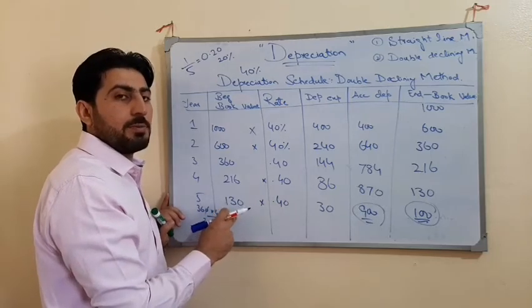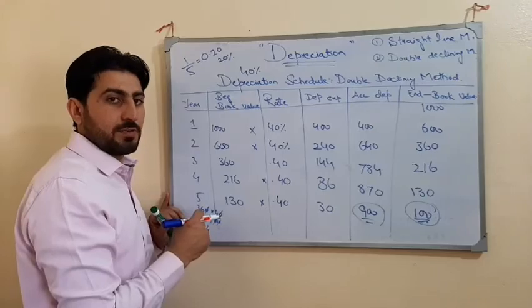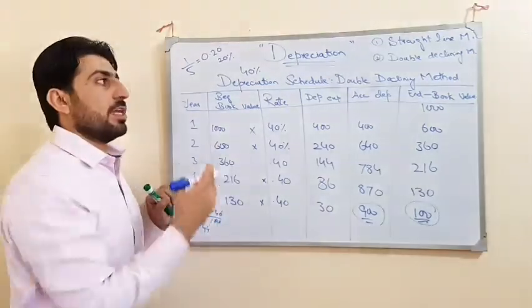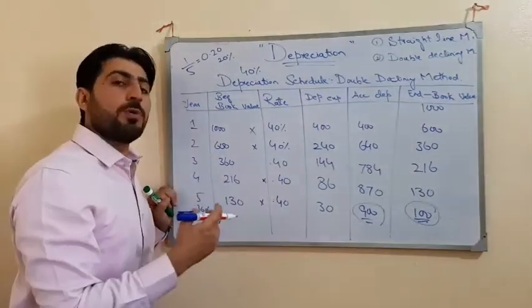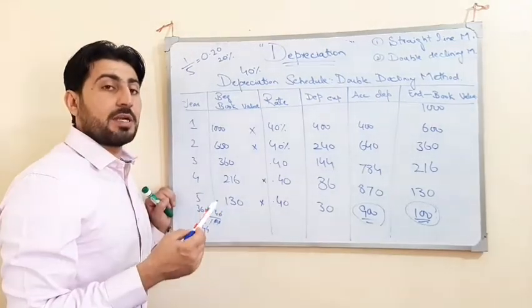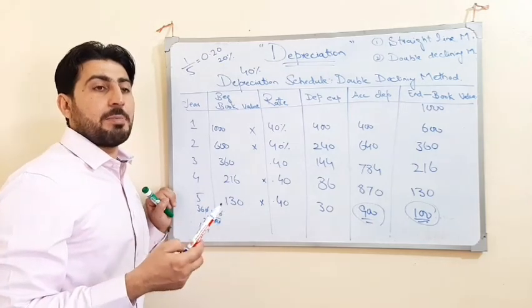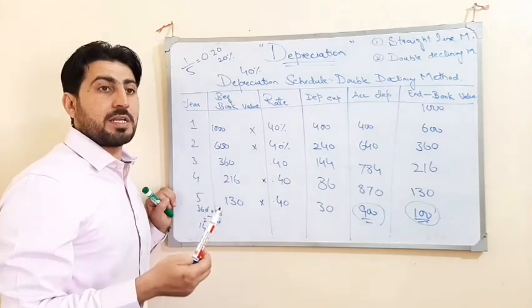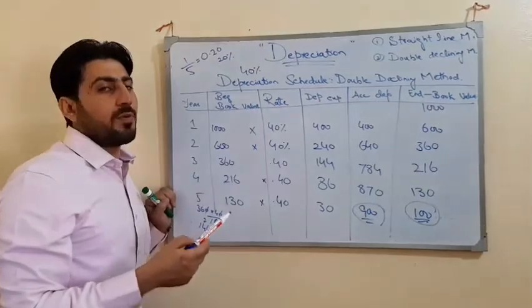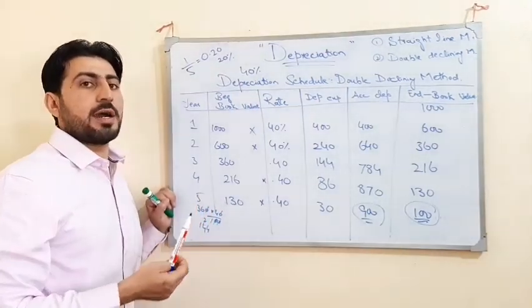So those were the methods of depreciation. These two methods — straight line and double declining — are the most important. In addition to these, there are other methods such as the annuity method, activity method, funds method, and insurance method. But these two methods are the most widely used. I hope students have understood.